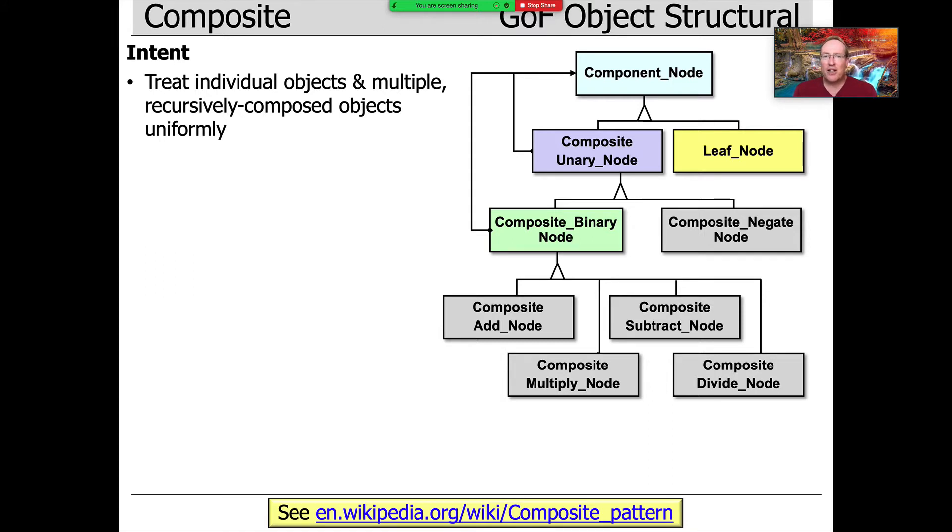This pattern, as we mentioned before when I gave the forest-level overview as opposed to the tree-level overview, treats individual objects and multiple recursively composed objects in a uniform way.